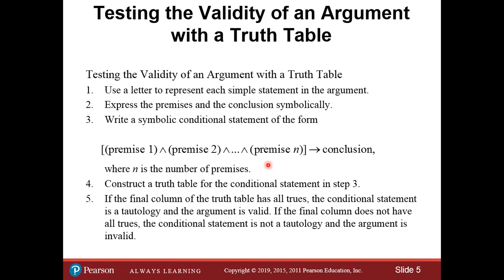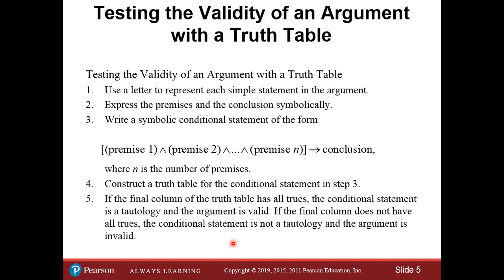This sets up our argument as a conditional statement: all of the premises connected by 'and' — because in order for that piece to be true, all the 'and' components must be true at the same time — and then an arrow to the conclusion. N is the number of premises, so you can have one or more. If the final column of the truth table does not have all true values — meaning it contains at least one false — then it is not a tautology and therefore is an invalid argument.